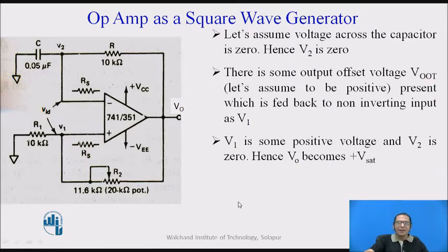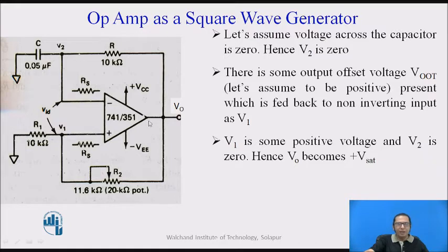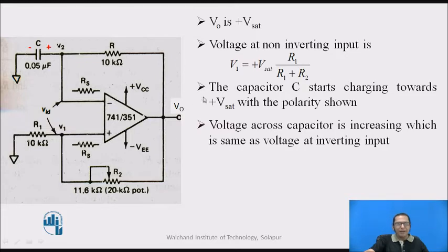Let us first look at a simple circuit where an op-amp can be used as a square wave generator. Let us assume that when I turn the power supply on, the initial charge on the capacitor is 0, so the voltage V2 is equal to 0. Meanwhile, there is some output offset voltage present which is fed back and available at the non-inverting terminal as V1. Let us assume the output voltage is plus Vsat, so the voltage at V1 is equal to plus Vsat multiplied by R1 divided by (R1 plus R2), due to the voltage divider rule. Initially, V2 equals 0, V1 equals plus Vsat × R1/(R1+R2), and the output equals plus Vsat.